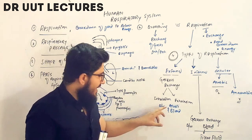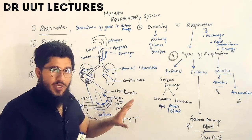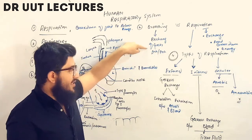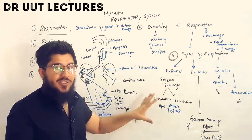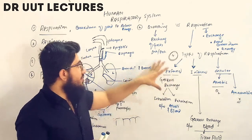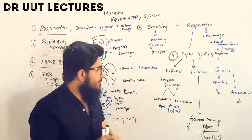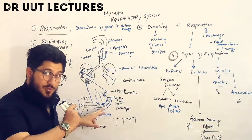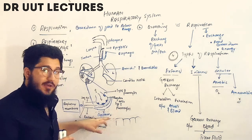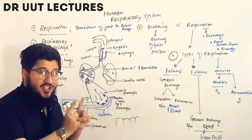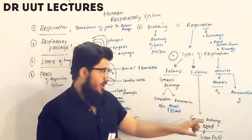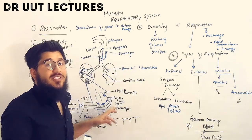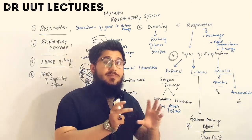External respiration is the exchange of gases between the alveolus and the blood. Another term for external respiration is breathing — both involve gas exchange, so these terms can be used interchangeably. Internal respiration is the exchange of gases between the blood present in the capillaries and the tissue fluid. So: alveolus ↔ blood = external respiration; blood ↔ tissue fluid = internal respiration.